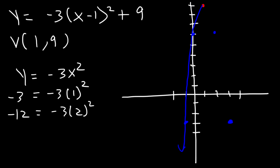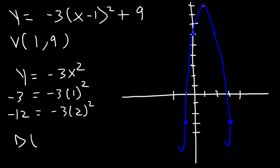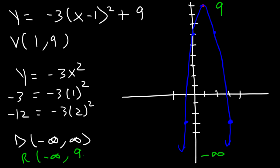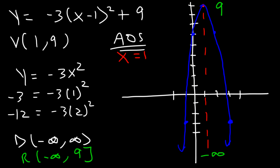The graph opens downward. As you increase the a value, the graph becomes more narrow and stretches vertically. The domain is still all real numbers. The highest y value is 9 and the lowest is negative infinity, so the range is from negative infinity to positive 9. The axis of symmetry is the x-coordinate of the vertex, so x equals 1. Since the graph opens downward, it has a maximum value of 9. The maximum and minimum values can always be found at the vertex.